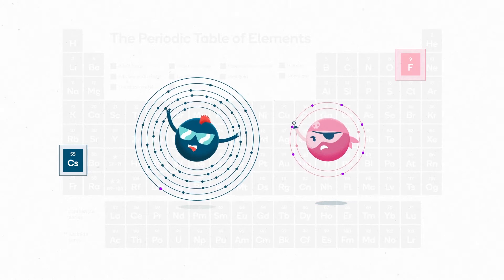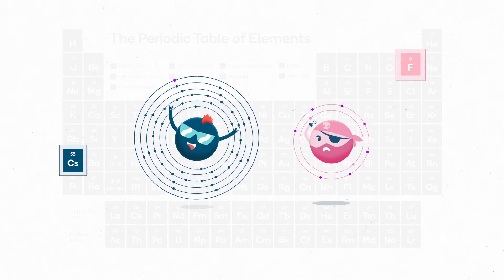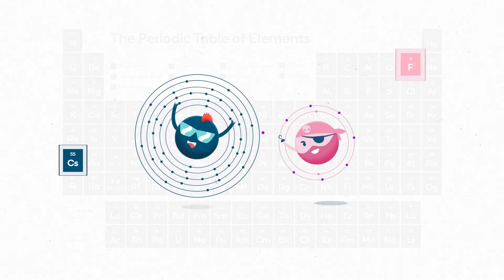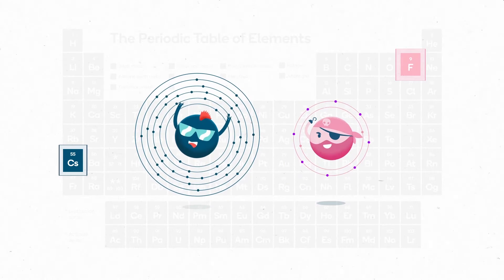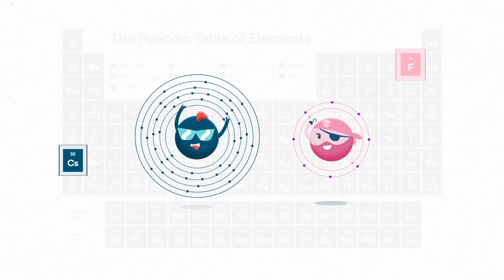Elements on the right hand side of the table still want a full valence shell. But it's easier for them to accomplish this by gaining one or two electrons than by losing six or seven of them.